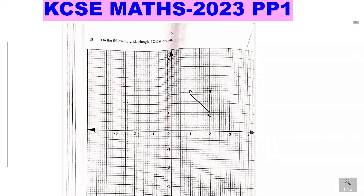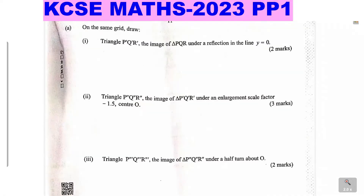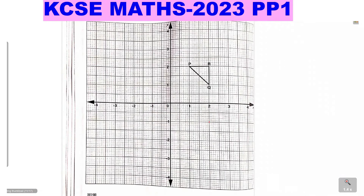Question 18: on the following grid, triangle PQR is drawn. Part A asks us to draw triangle P'Q'R', the image of triangle PQR, under a reflection in the line y=0. It's good to note that y=0 is the x-axis — that is the equation of the x-axis. So we reflect PQR under the line y=0, which is the x-axis.